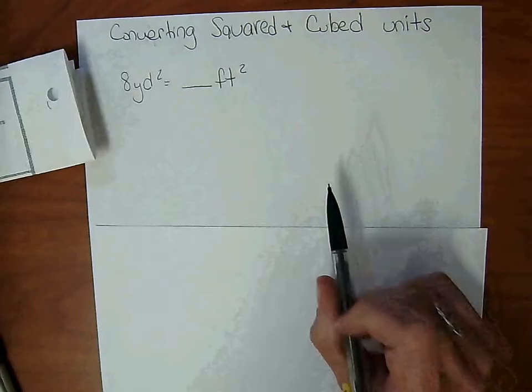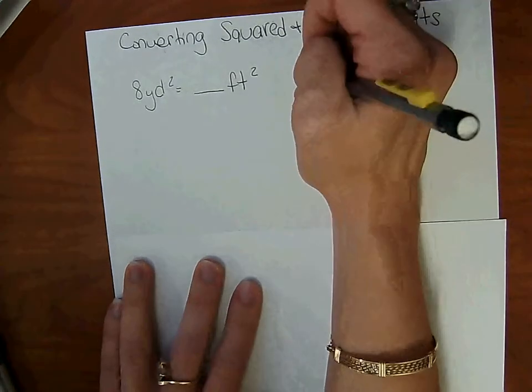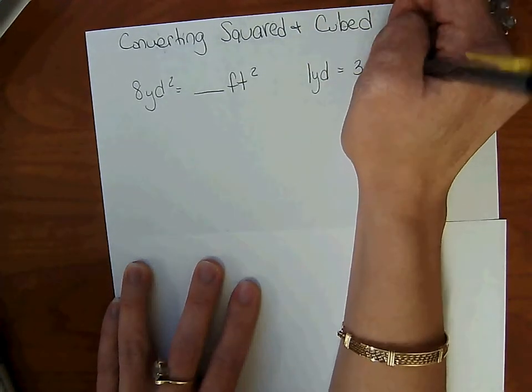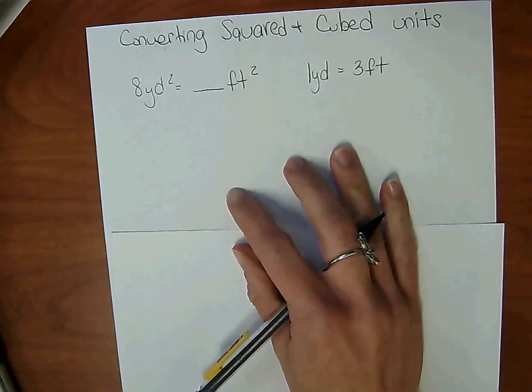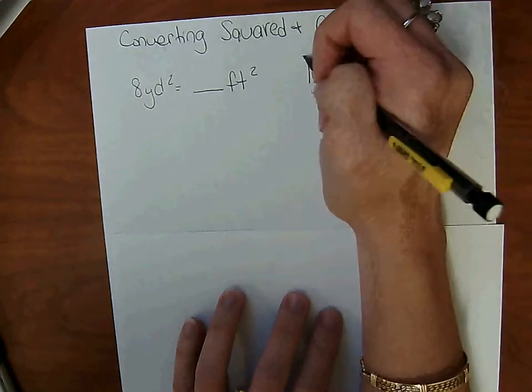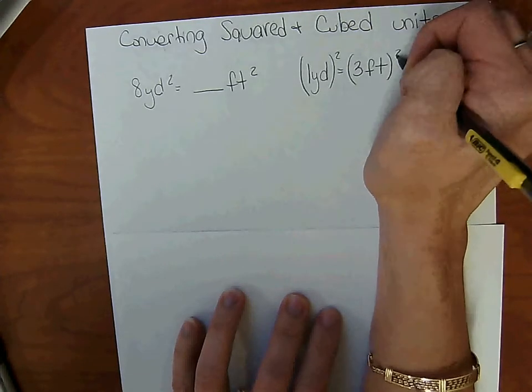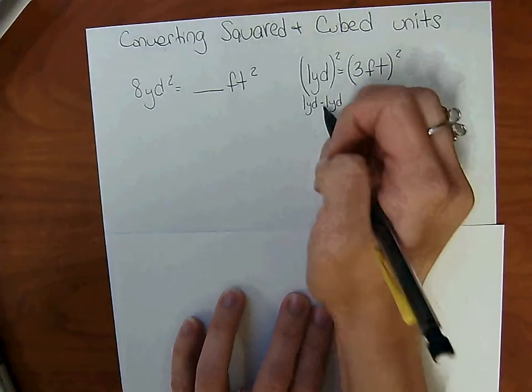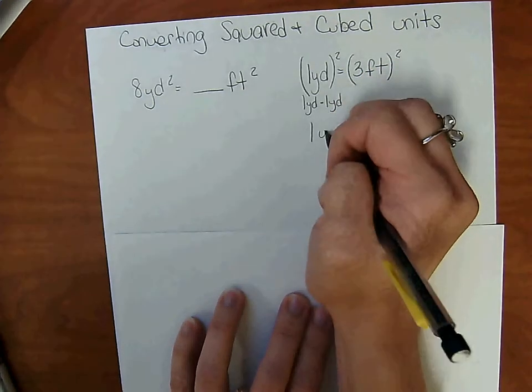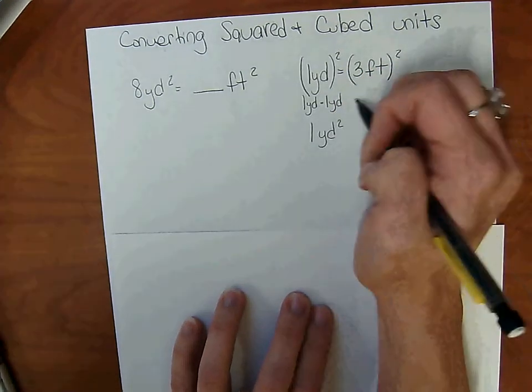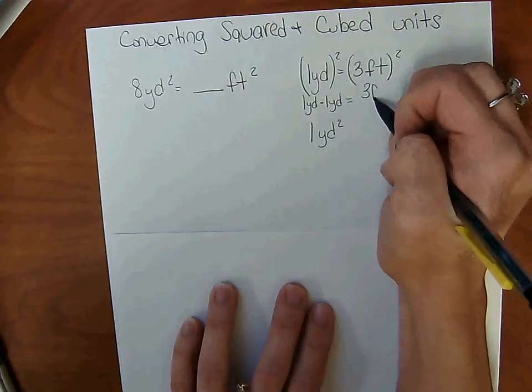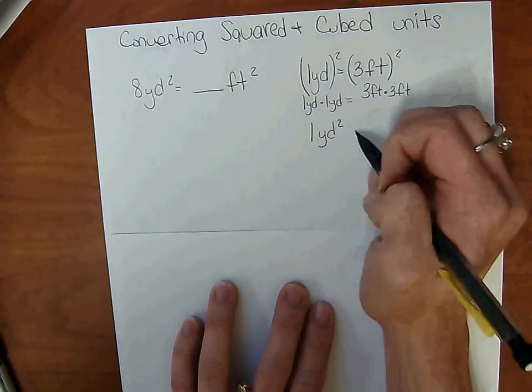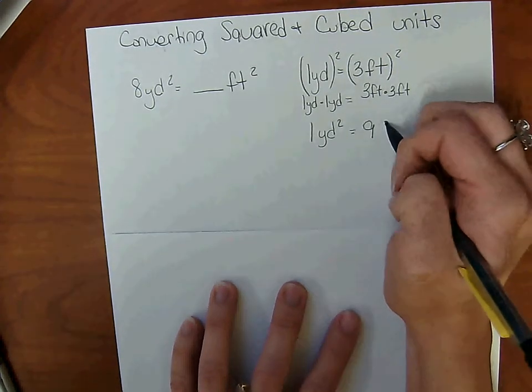The fact we know about yards and feet is 1 yard is equal to 3 feet. And if we square both of those, 1 yard squared means 1 yard times 1 yard. 1 times 1 is 1, yard times yard is squared yards, equals 3 feet times 3 feet. 3 times 3 is 9 and feet times feet is feet squared.